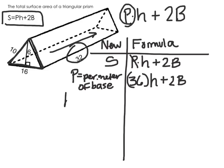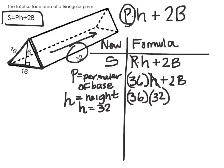So the H is the height. So the H is equal to 32. Now in place of my H I can put a 32. I now have 36, the perimeter of the base, times 32, the height, plus 2 times capital B.